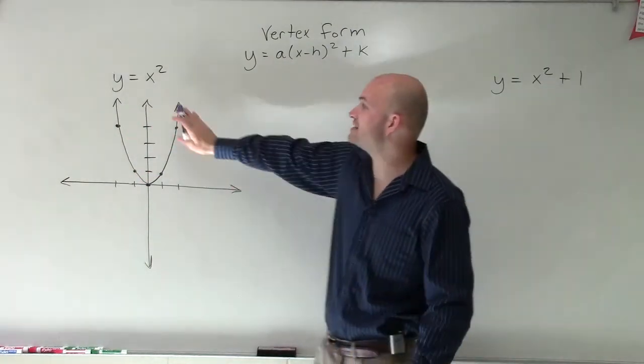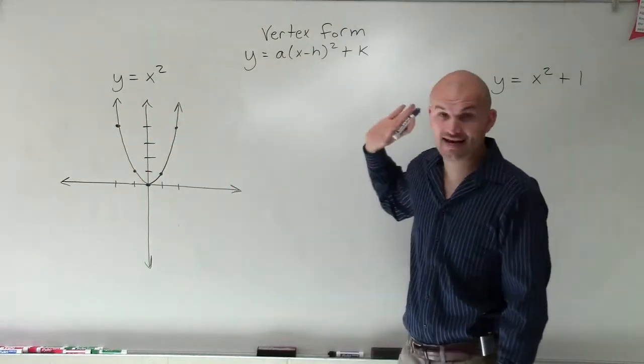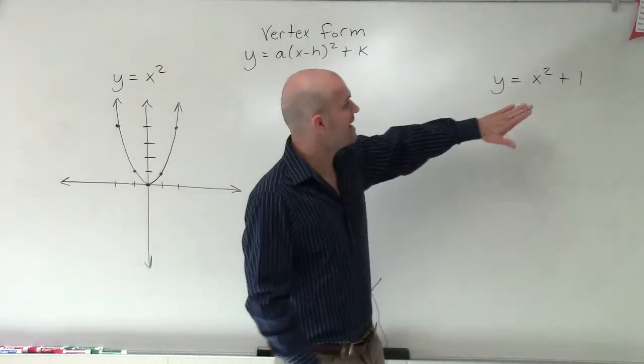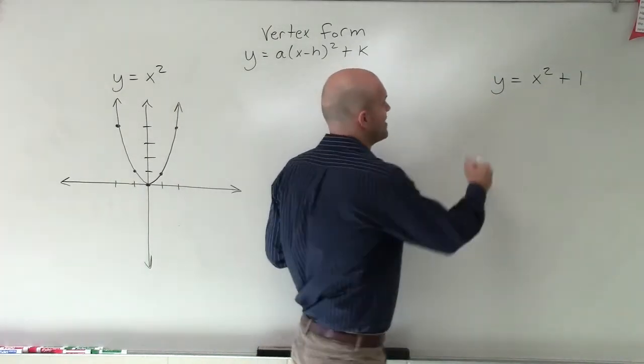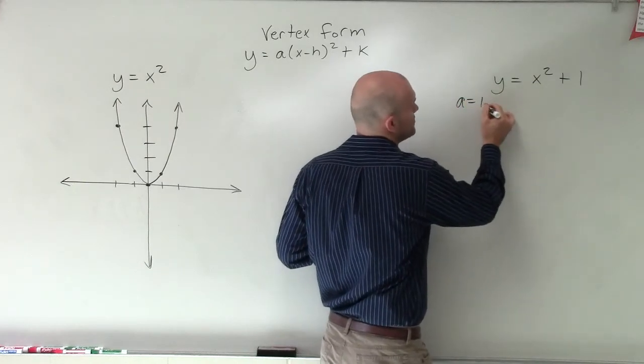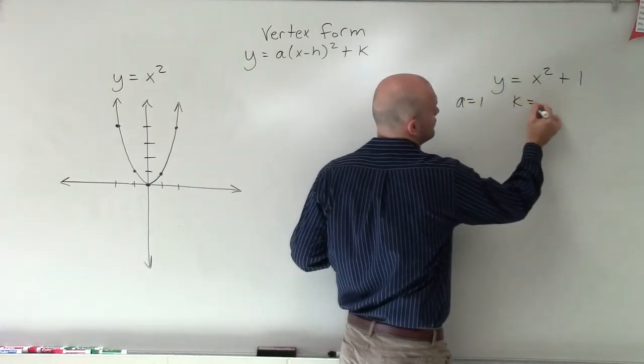So when we look at our parent graph, we notice that a equals 1 and h and k are both 0. So what we're going to do now is determine what else has changed with this graph. Well, in here, you could say that a equals 1, but now we have k equals 1.